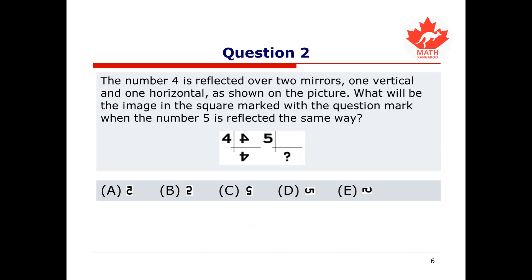Let's try a slightly more difficult problem. The number 4 is reflected over two mirrors, one vertical and one horizontal, as shown in the picture. What will be the image in the square marked with the question mark when the number 5 is reflected the same way? Pause this video and try working it out yourself. And when you're ready, keep watching to see how it's done.